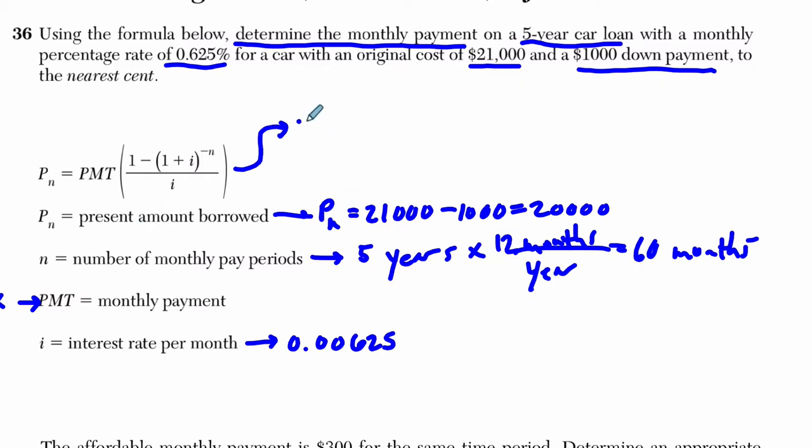P sub N is $20,000, that's the amount we borrowed, equals our payment X, you don't have to call it X, you can leave it as the payment, times 1 minus 1 plus the interest 0.00625,